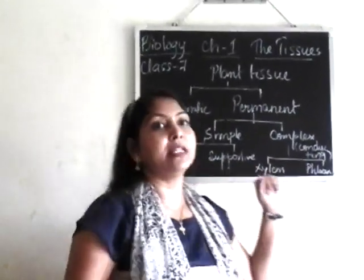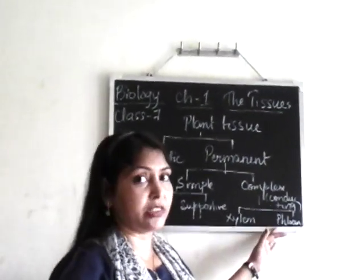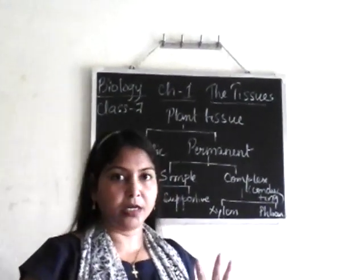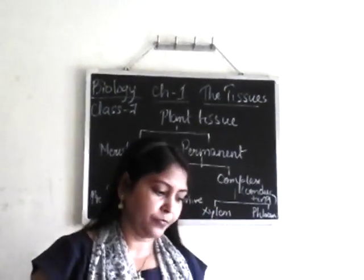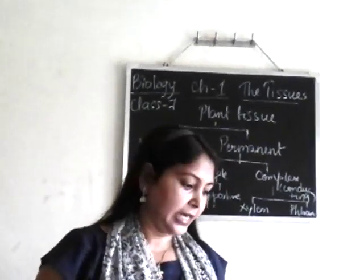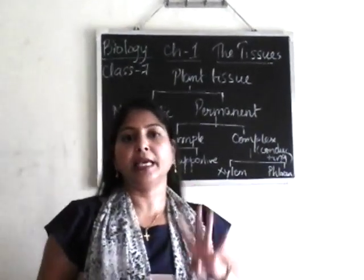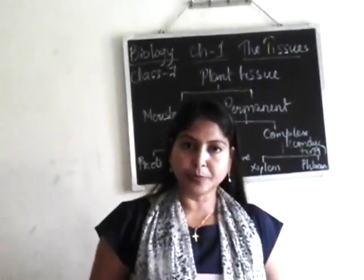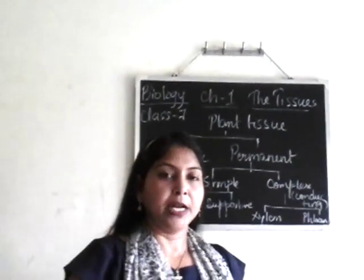In phloem, they are also made up of four types of parts. They consist of sieve tubes, companion cells, phloem parenchyma, and phloem fibers. So phloem is made up of these four parts: sieve tubes, companion cells, phloem parenchyma, and phloem fibers.